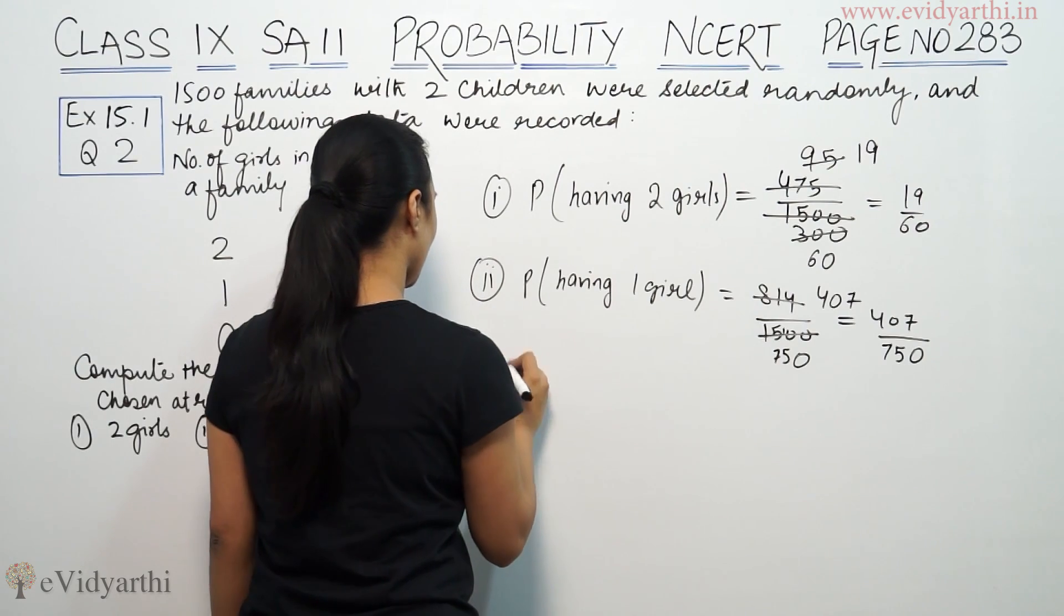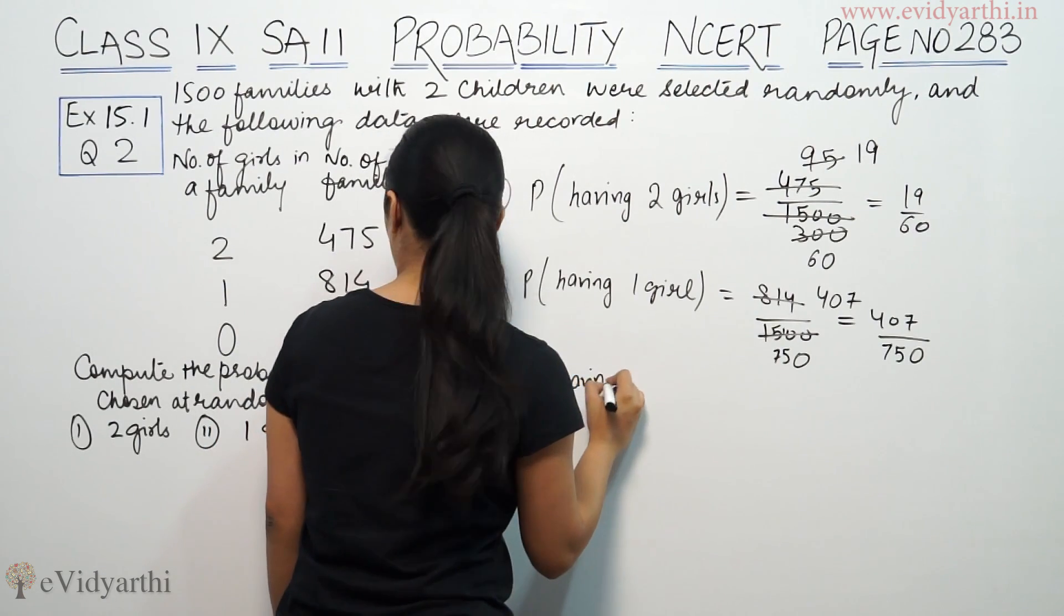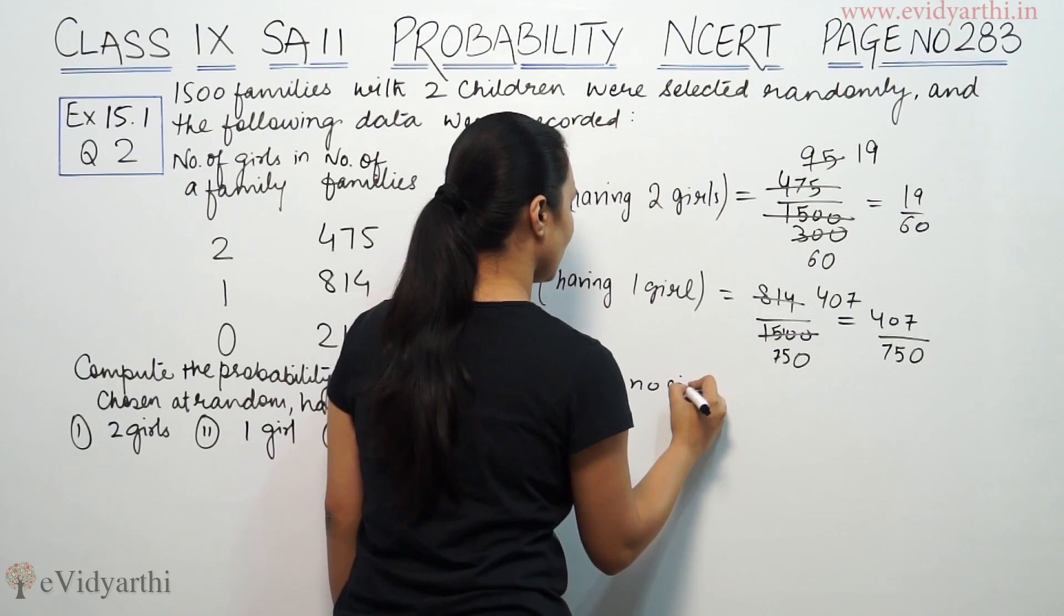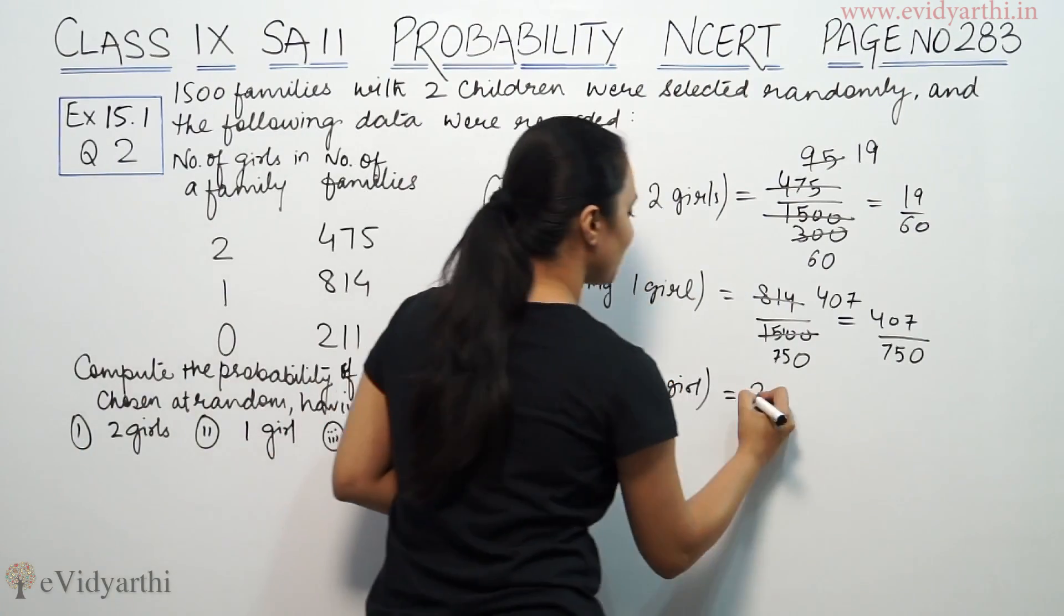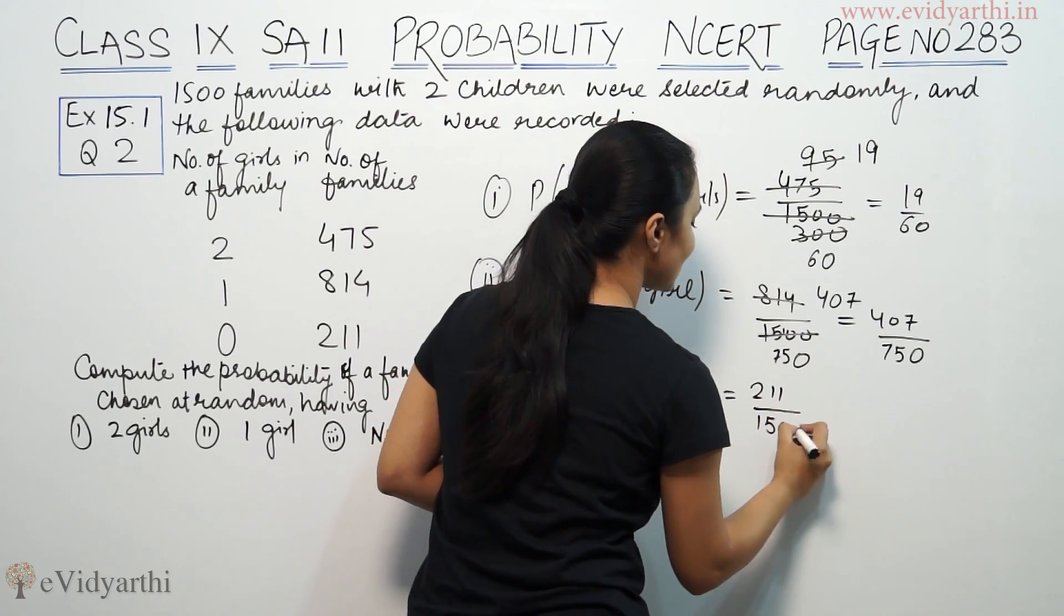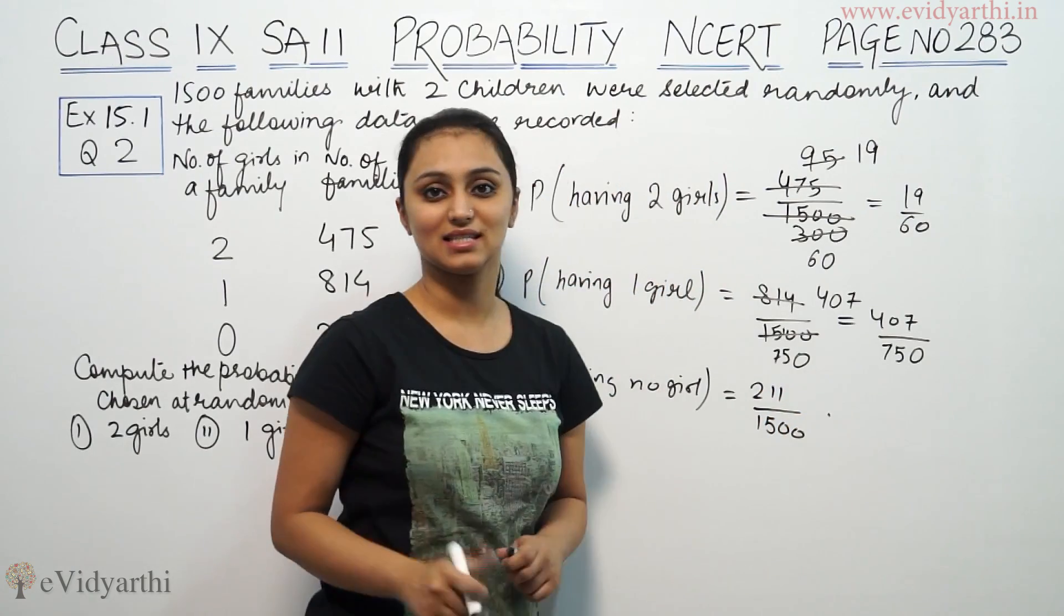Third part, probability no girl. No girl is 211 by 1500. We cancel it. So you will see that on the desk.